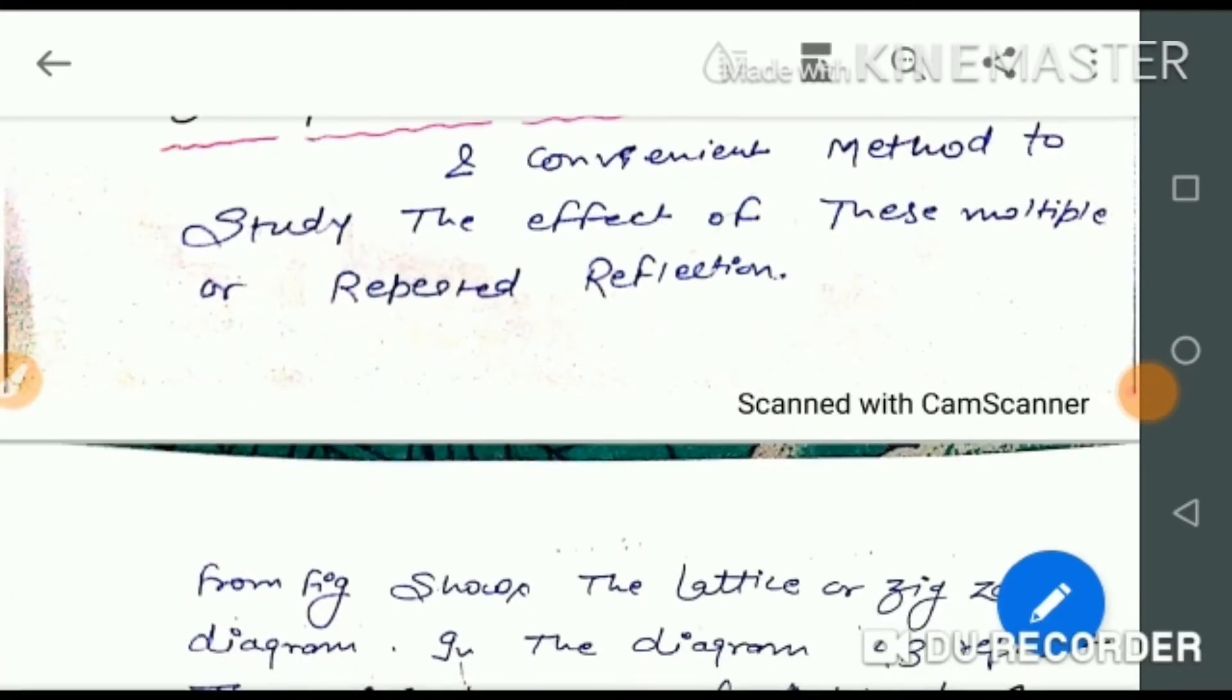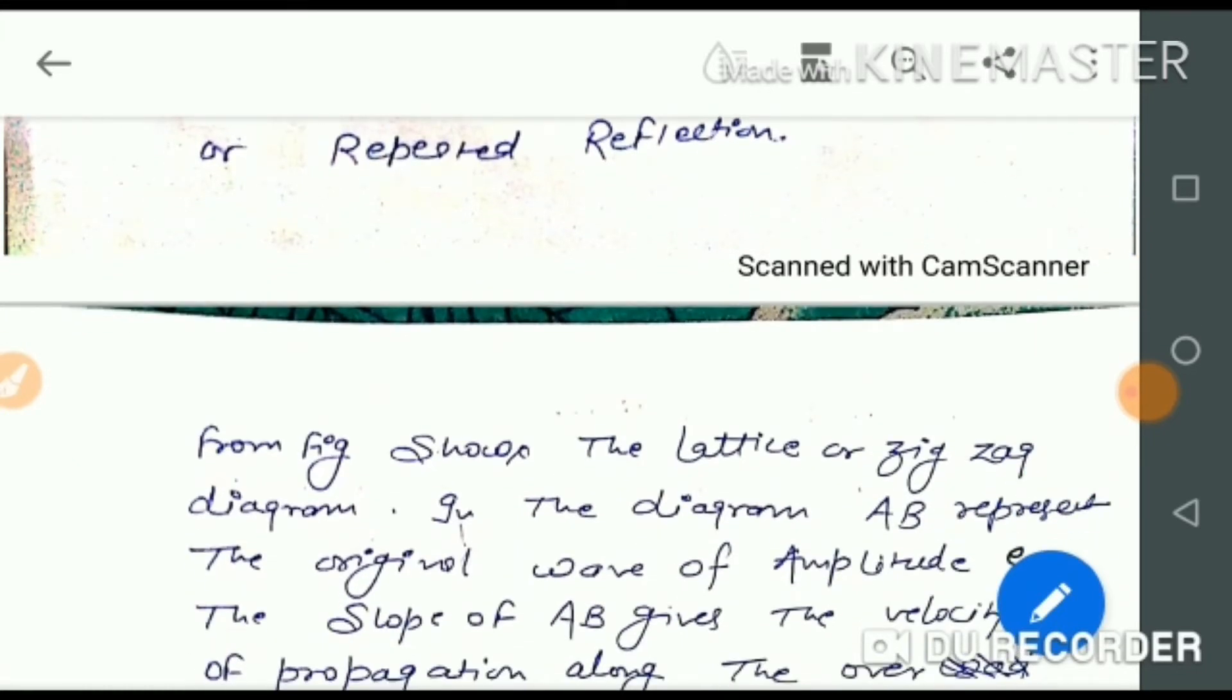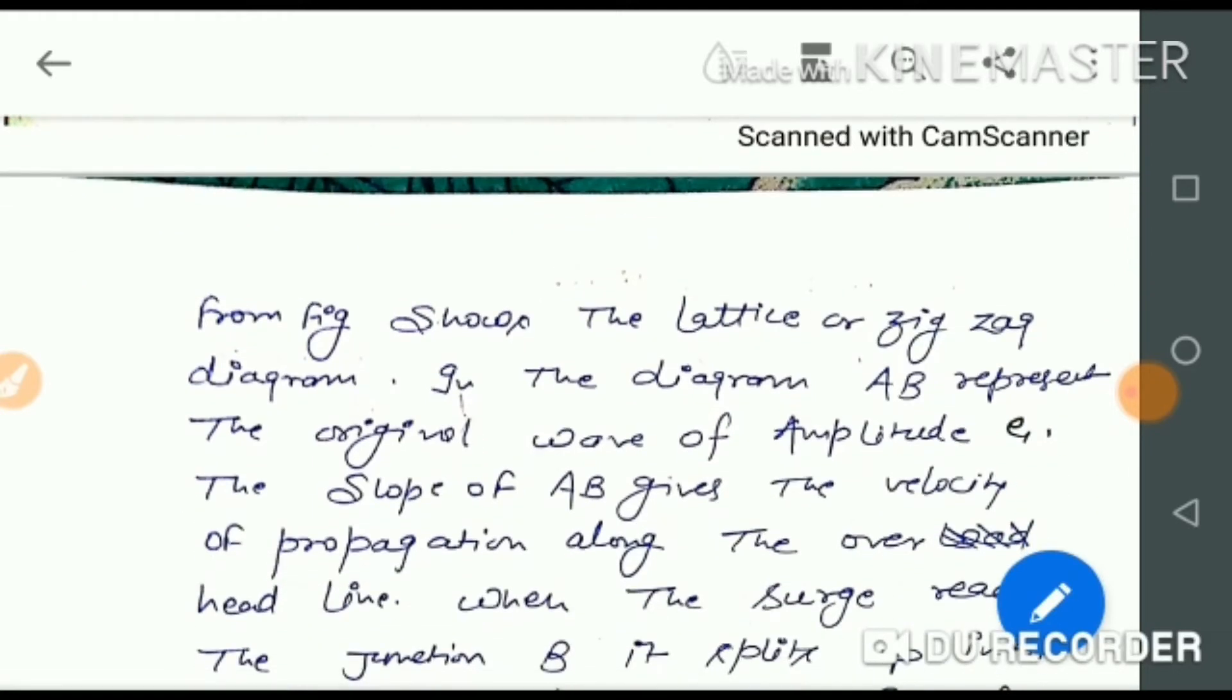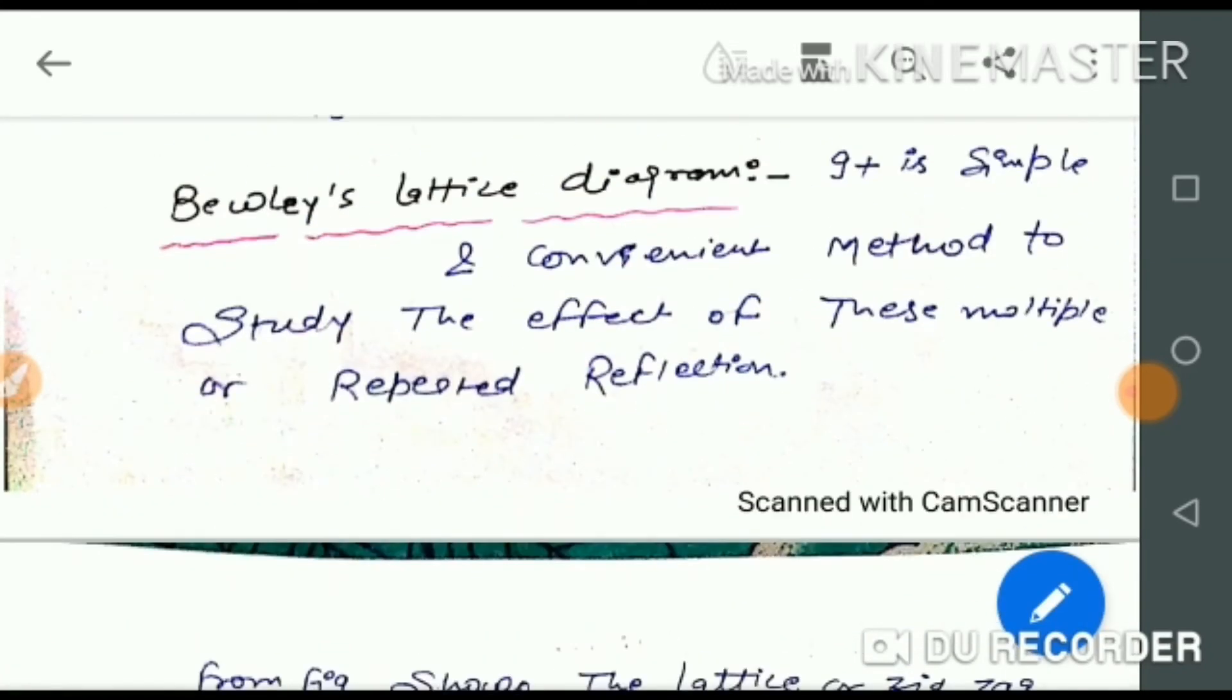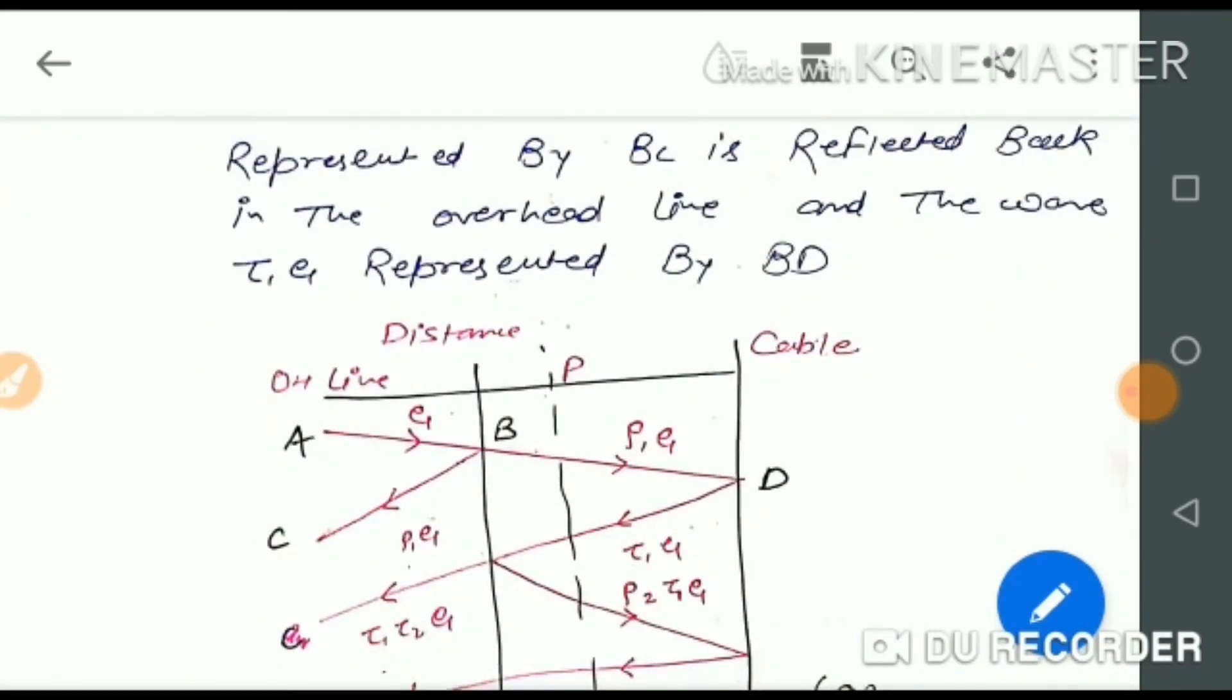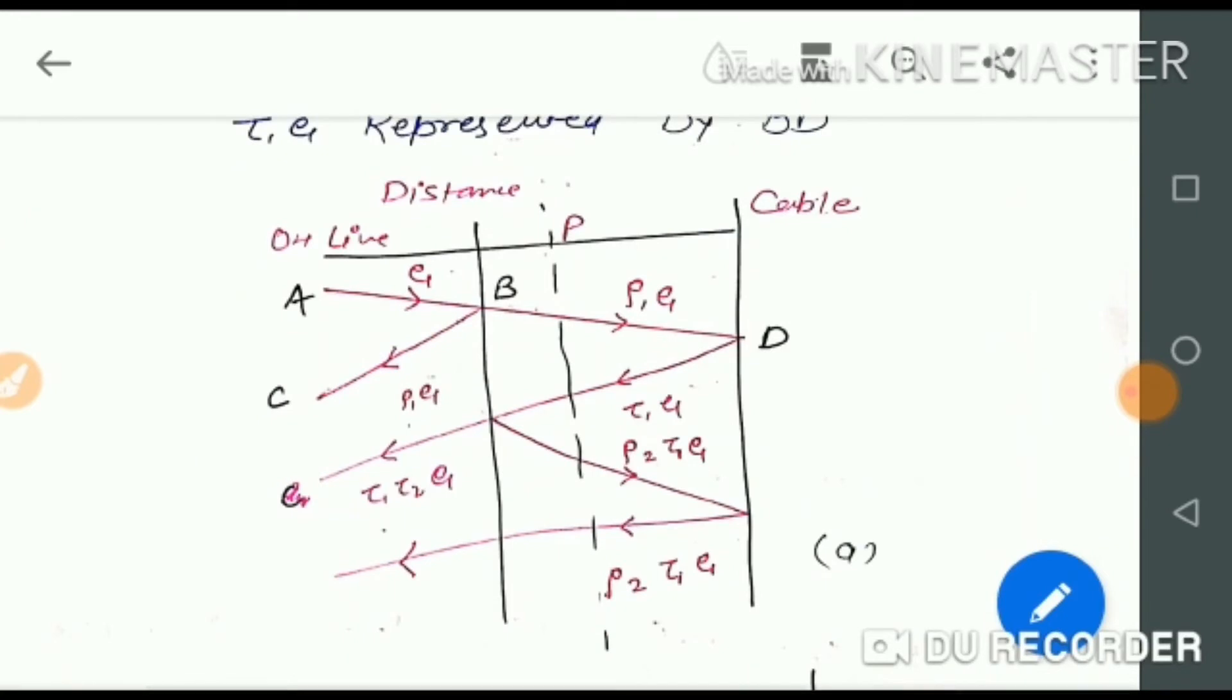It gives a picture of the position and direction of every incident, reflected, and transmitted wave on the system. The lattice diagram is a distance-type graph where the distance along the system and the direction of the original surge is taken.